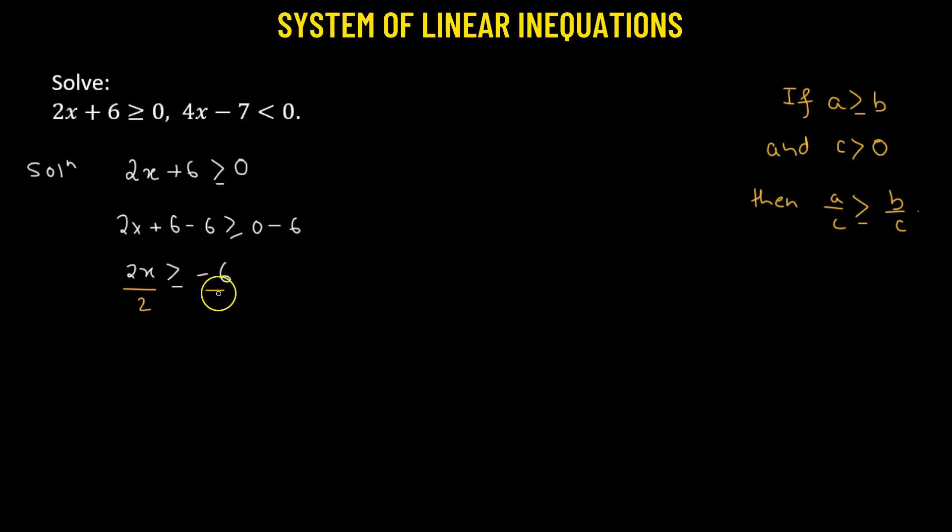In our case, we're going to divide both sides with 2. This gives x greater than or equals to negative 3. So let's call it equation number 1.